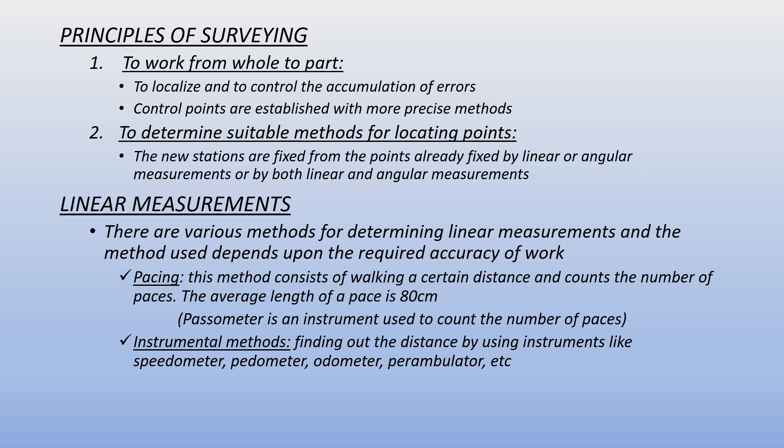The next principle covers linear measurements. There are various methods for determining linear measurements, and the method used depends upon the required accuracy of work. The first method is pacing, which consists of walking a certain distance and counting the number of paces. The average length of a pace is 80 cm.